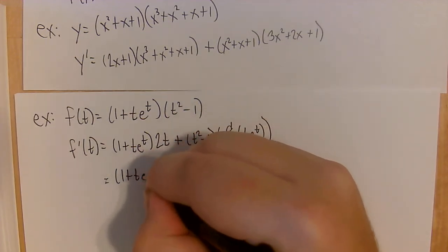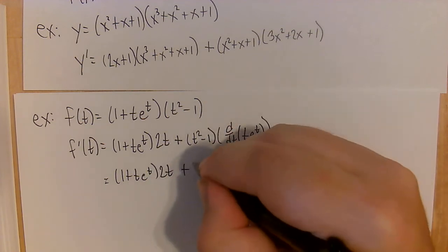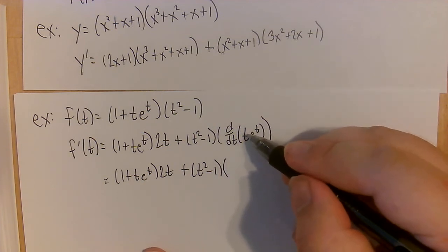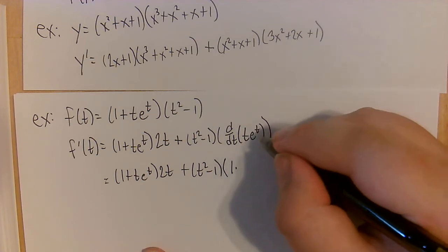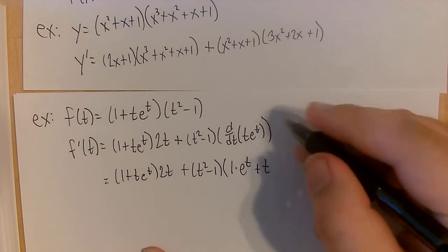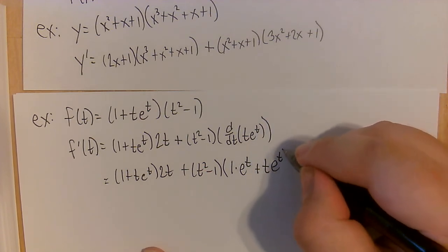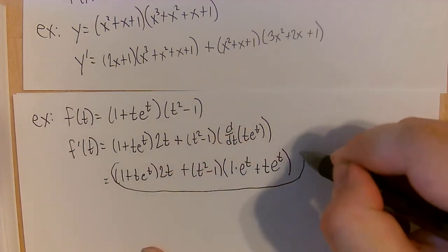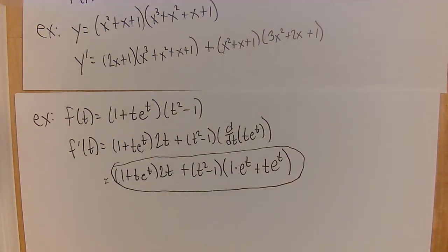Let's rewrite everything. For the inner product rule on t times e to the t: I take the derivative of t first, getting 1, times e to the t, then leave t and take the derivative of e to the t, which is e to the t. So the derivative of t e to the t is e to the t plus t e to the t. We've resolved all the derivatives in our expression. If we wanted, we could foil it all out, but our goal is just finding the derivative for now.